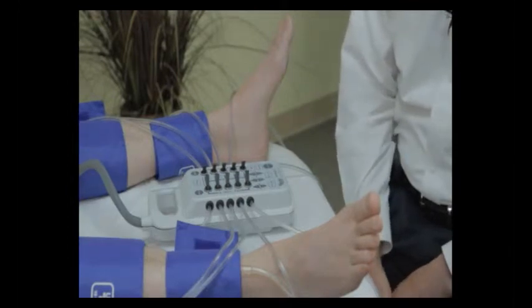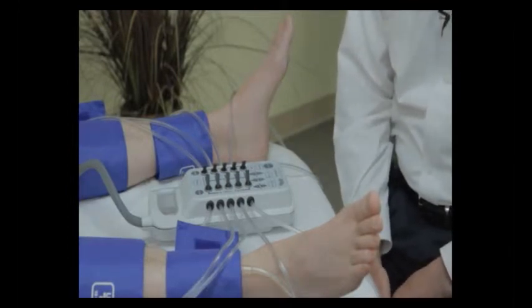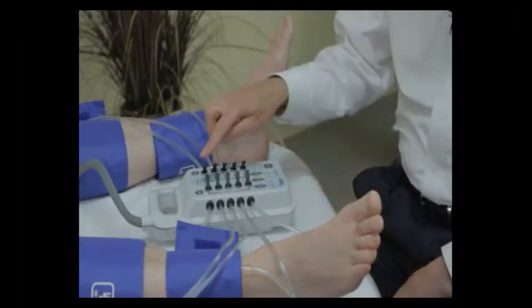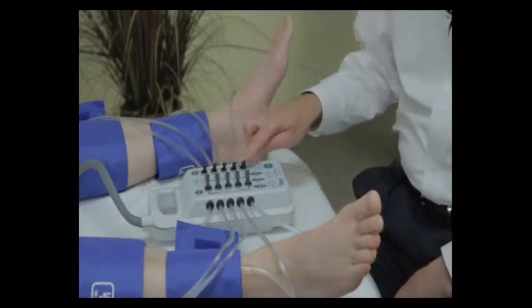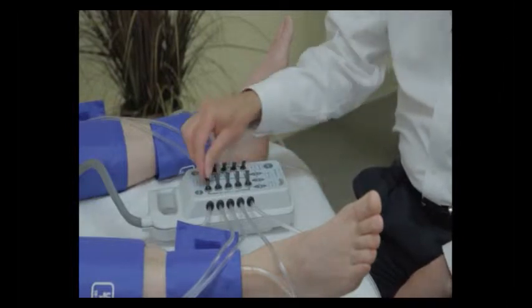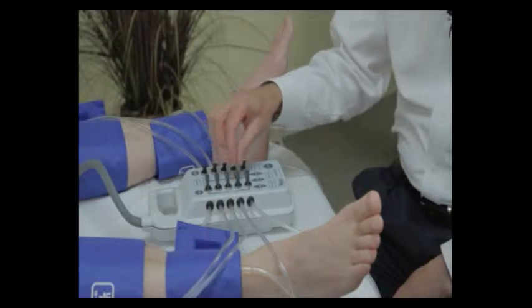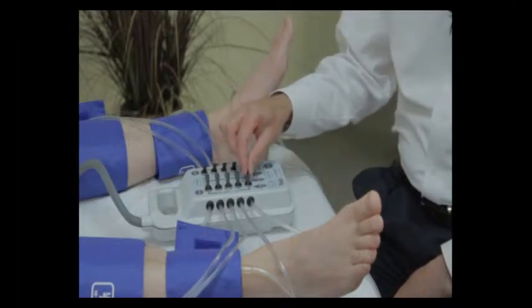This video is going to show you how to operate your Multilab 2 CPR multiple cuff selector. This has valves on it, five on each side, for the arm cuff, high thigh cuff, above knee cuff, calf cuff, and ankle cuff.